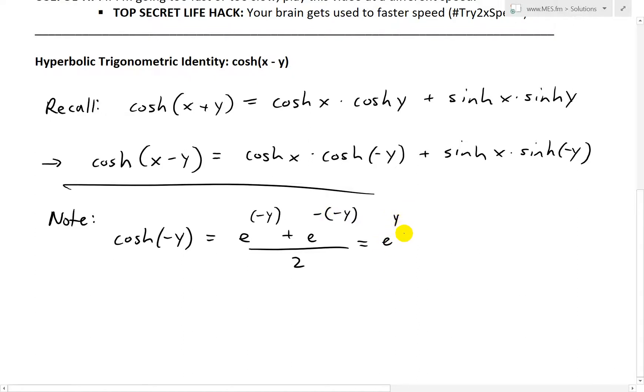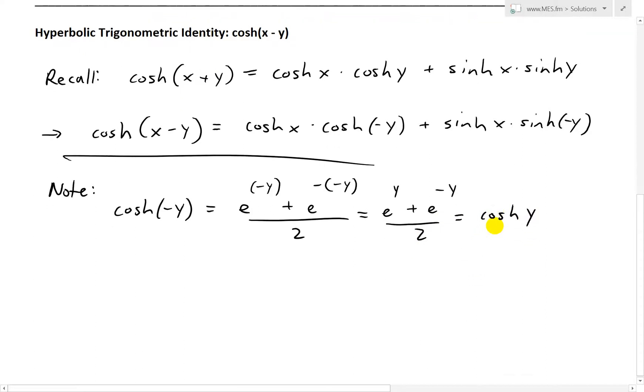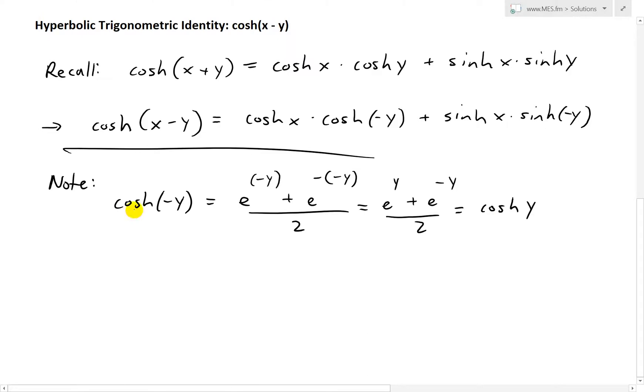and I'll move it on this side, and then plus e to the negative y. So I just move this over to that side, divided by 2. This just equals to cosh y. That's just by definition. So we have cosh negative y equals to cosh y. So we just replace that.